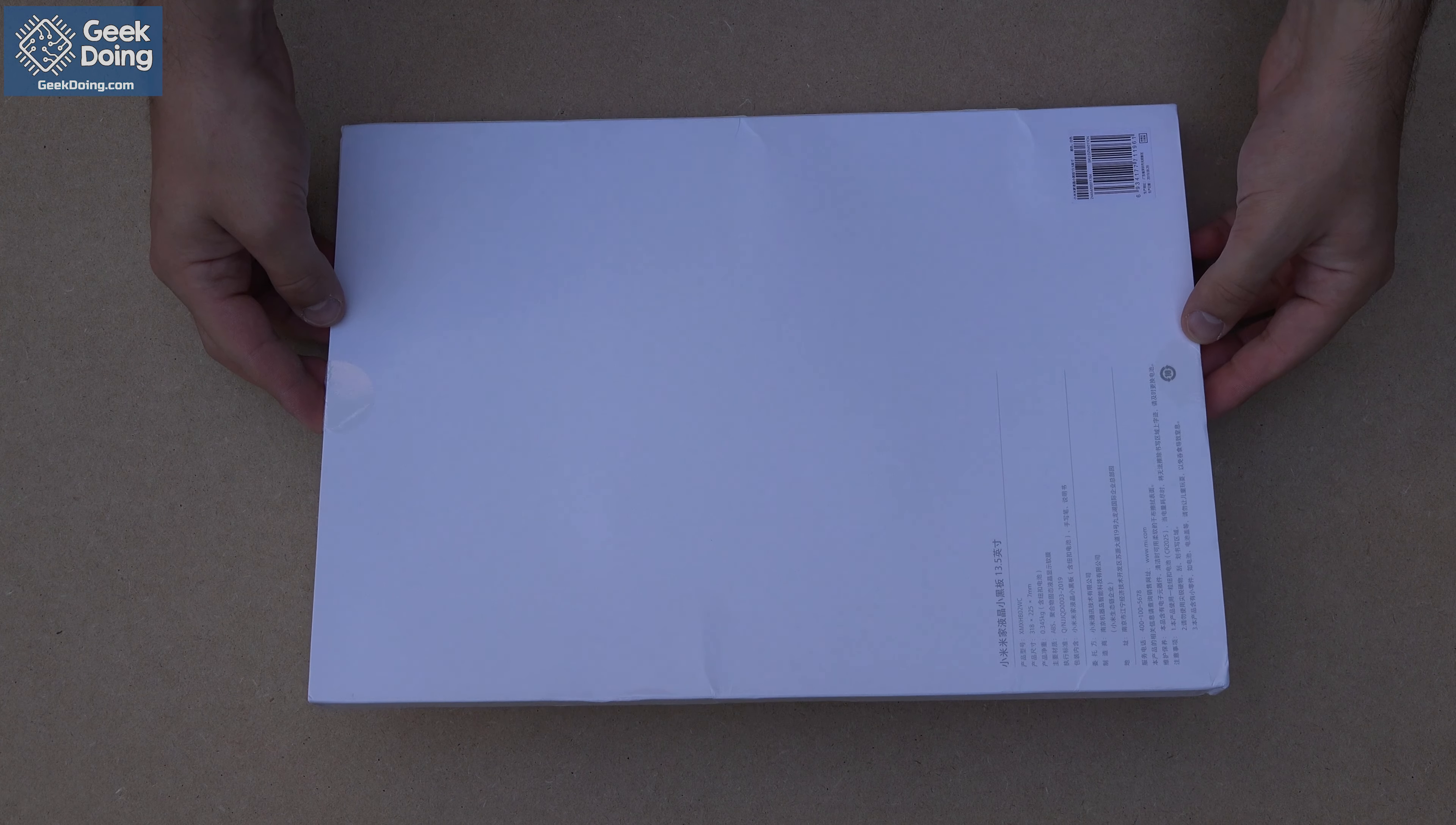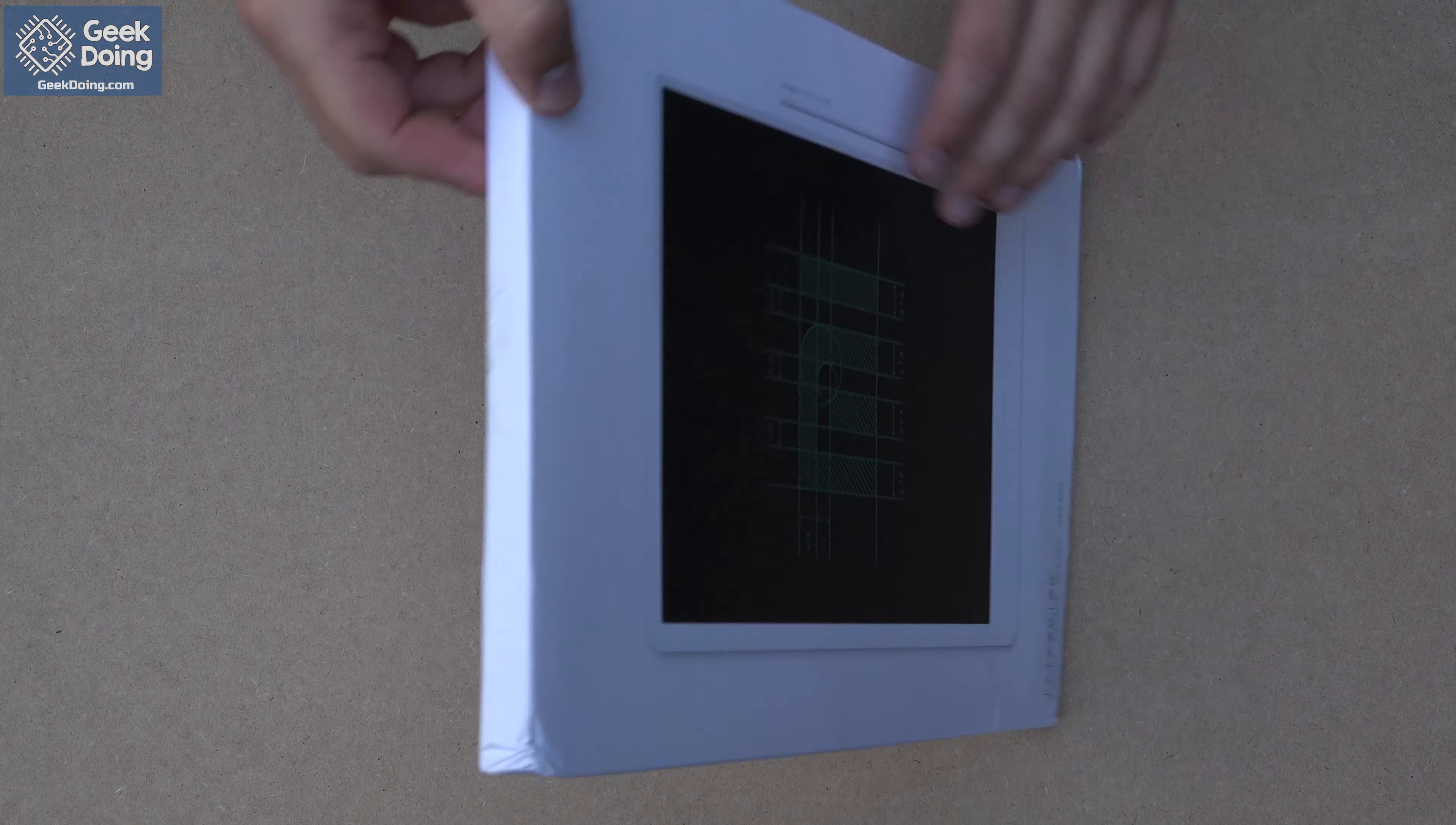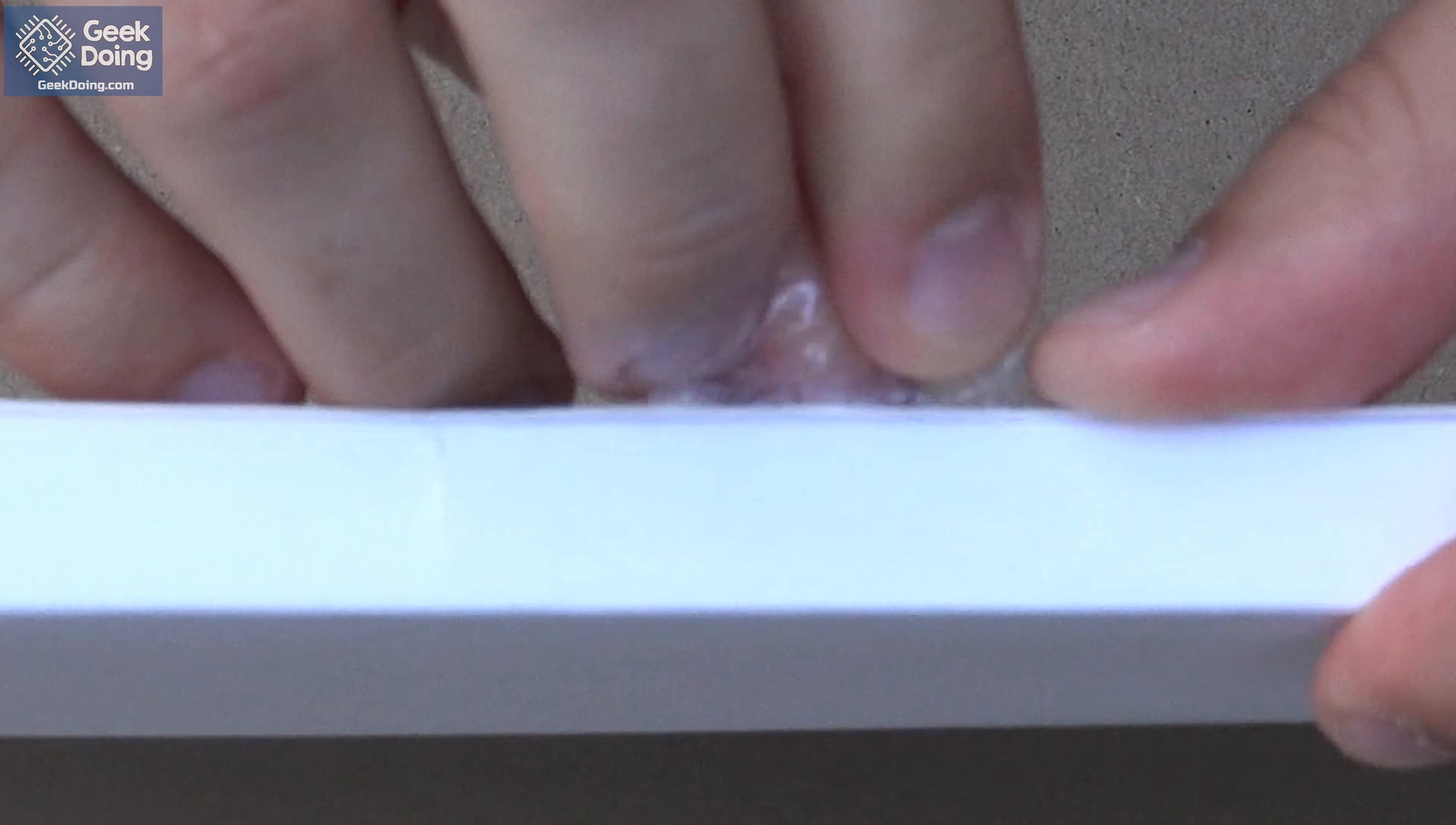The box is very nice and has the sleek, minimal design of the Xiaomi Mijia products, with a neat render of the LCD blackboard on the front. The top of the box is sealed with some tape, so let's get that off first.